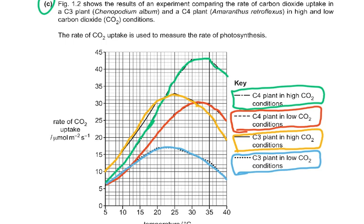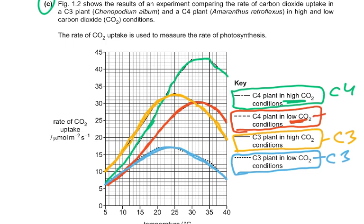C4 plants in high CO2 is the green line. C4 plants in low CO2 is the red line. C3 is the yellow shade — the C3 increases and then decreases. So we've got two C3s and two C4s. You must do this identification yourself when reading the question, then read the question: 'Using figure 1.2, compare the rates of photosynthesis in high CO2 conditions in the C3 and C4.'